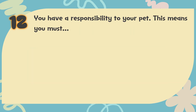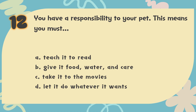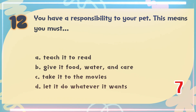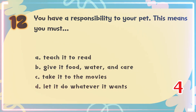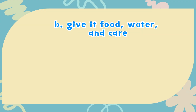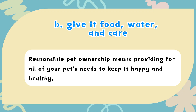Number 12: You have a responsibility to your pet. This means you must — A. Teach it to read, B. Give it food, water, and care, C. Take it to the movies, D. Let it do whatever it wants. The correct answer is B. Give it food, water, and care. Responsible pet ownership means providing for all of your pet's needs to keep it happy and healthy.